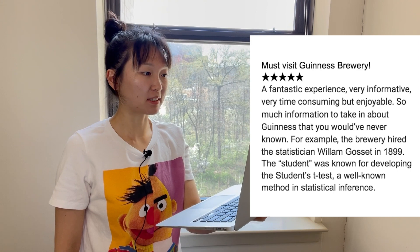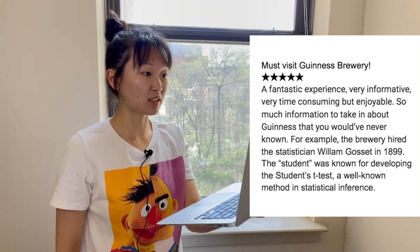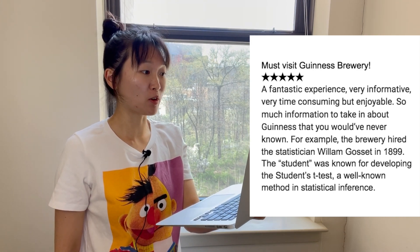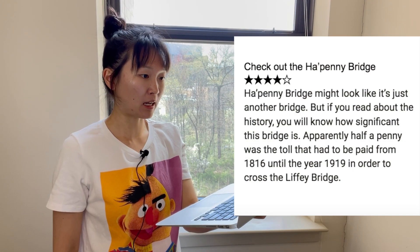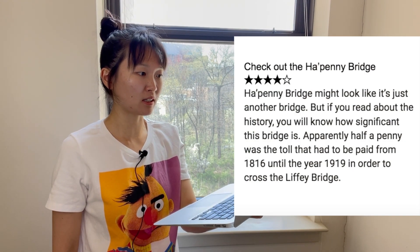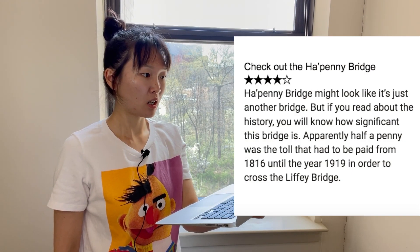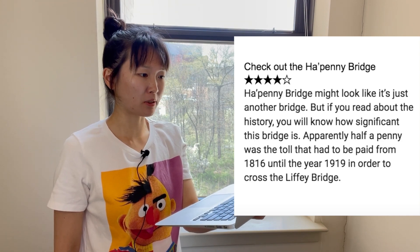This one review talks about the Guinness Brewery. The text mentions a student, and I have no idea who that refers to. This other review is about the Hapenny Bridge, and then also mentions the Liffey Bridge. Why is it suddenly mentioning another bridge?